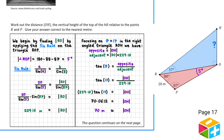I'll label the 5 degrees as angle A, and the opposite side — 20 metres — as little a. I'll label 87 degrees as angle B, and the opposite side RO as little b. Substituting into the sine rule formula and multiplying both sides by sine 87 to isolate RO, we find that the length of RO is 229.16 metres.